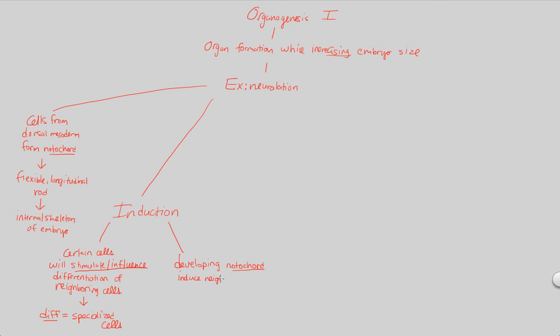That structure, that initial structure, is going to induce the neighboring, overlying ectoderm. Induce the close by, the neighboring, overlying, so it's all around it, ectoderm region. So we have notochord. Certain cells of the notochord will stimulate and influence the differentiation of neighboring cells of the ectoderm. How is this going to happen? What is the stimulation and the influence that it causes? It causes the ectoderm. The notochord induction is going to cause the ectoderm to thicken. So the ectoderm thickens, and then forms a structure that's important here. Forms what is known as the neural plate.